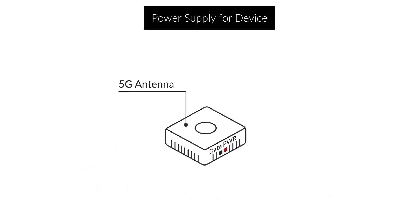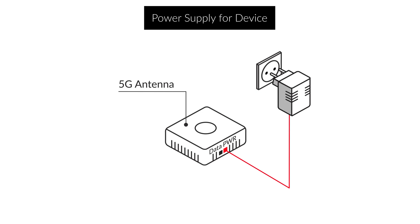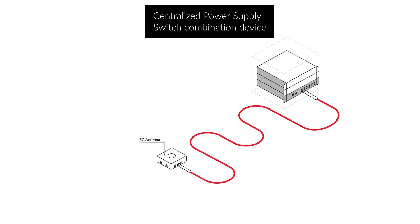Single mode fiber connections provide all the bandwidth one could wish for. However, how does one provide power to the remote devices with glass fiber? The use of distributed small power supplies at each device location has a bad reputation in professional environments due to efficiency and reliability issues. Therefore, device manufacturers began to provide a centralized power supply along with the fiber optic switch, with power supply cabling running alongside the fiber optic data cabling.